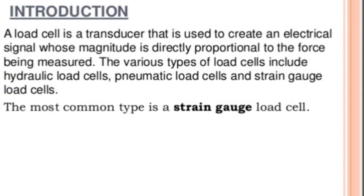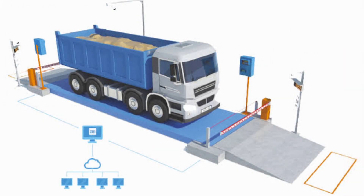What is a load cell? A load cell is a transducer that uses strain gauge principle to create an electrical signal whose magnitude is directly proportional to the force being measured. Whenever a vehicle comes to a load cell or weighing balance, the load cell produces electrical signals using strain gauges. When you apply the force, the resistance will change, and based on resistance changes, the voltage will also change.